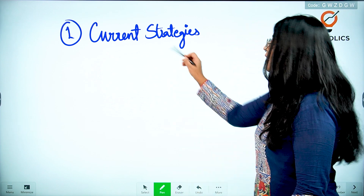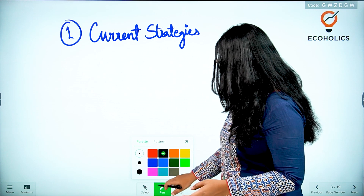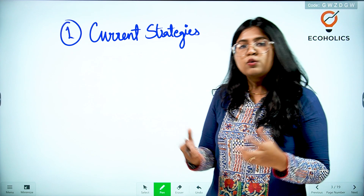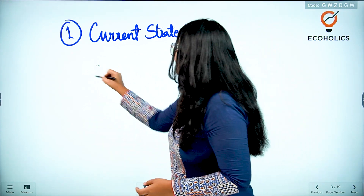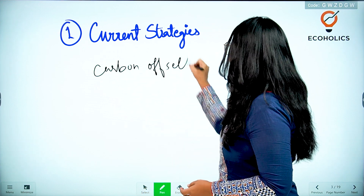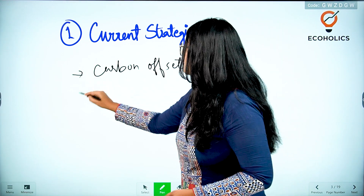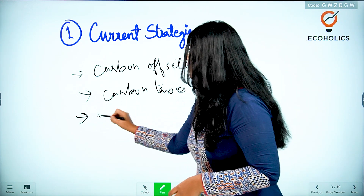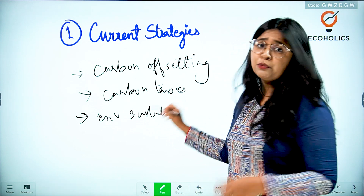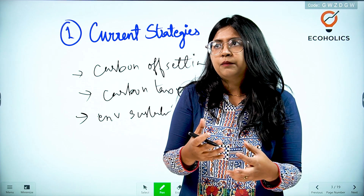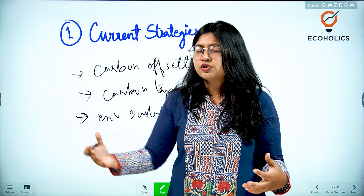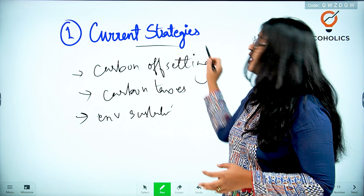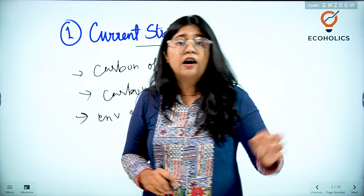Let's start with the very first strategy: current strategies. You must have seen that current affairs — not just related to economics but related to the environment — are frequent in the news. Magazines and news articles are filled with concepts related to carbon offsetting, carbon taxes, pollution taxes, or something related to environmental sustainability. Production methodologies are changing, and the industrial sector is also adapting new approaches to environmental capacity so that sustainability can be maintained.